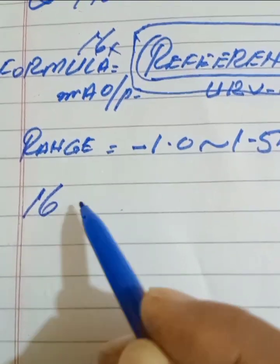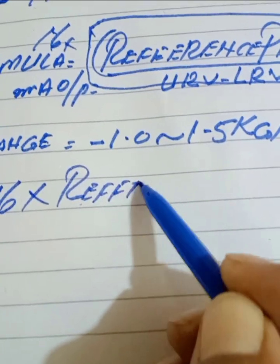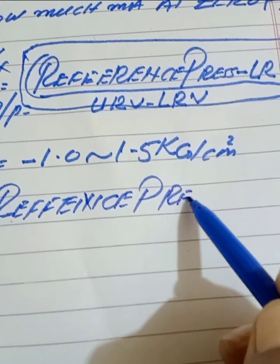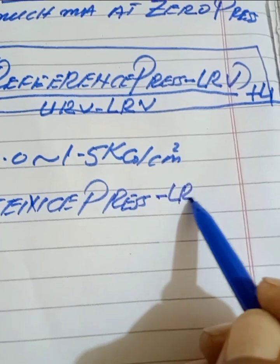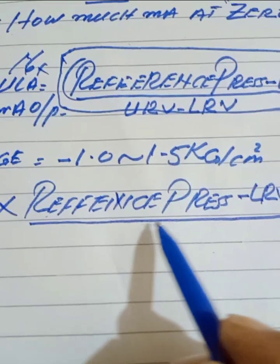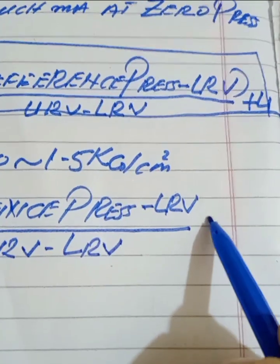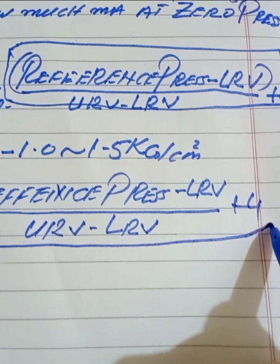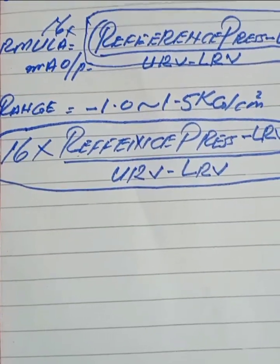We expand the formula as: 16 into (reference pressure minus LRV), divided by (URV minus LRV), plus 4. This is our formula. As per this formula, we will calculate the current value. Our transmitter range is minus 1.0 to 1.5 kg per cm squared. Let's put in the values.